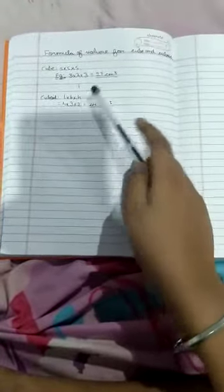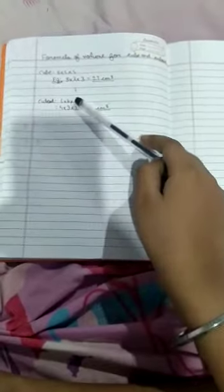So remember friends, cube's formula of volume is side into side into side, and cuboid's formula of volume is length into breadth into height. We don't have to count the cubes inside a 3D shape. We can directly calculate it using these formulas.